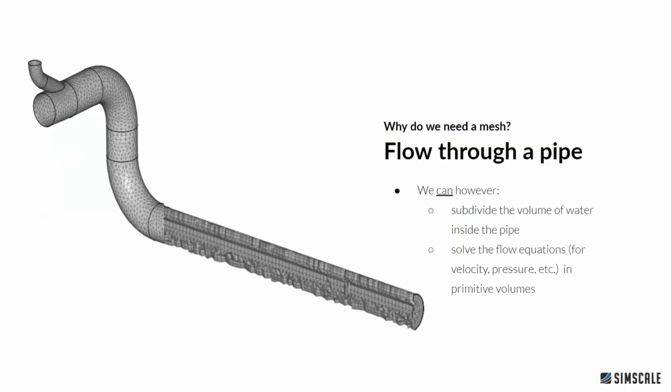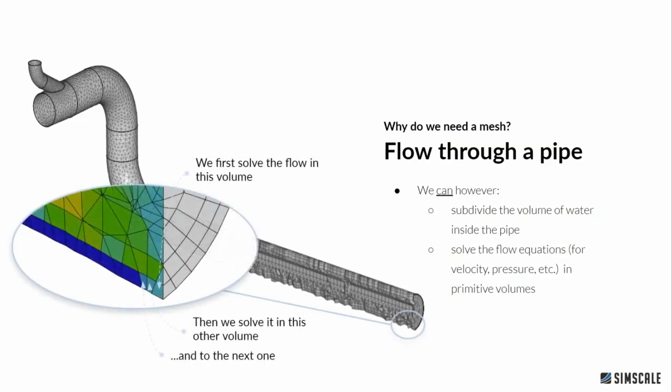What we can do, because we cannot analytically solve these equations, is subdivide the volume of interest — where the flow is going to develop — into smaller elements. In these small elements we can solve the flow equations like velocity and pressure. We know the inlet flow rate, calculate velocity and pressure in the first volume, then move to the next, and so on. This is exactly the principle behind CFD analysis and works similarly for FEA. This is essentially what meshing allows the solver to do.